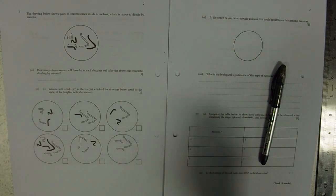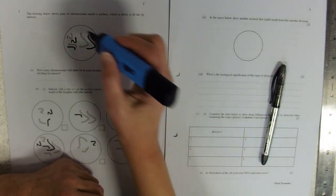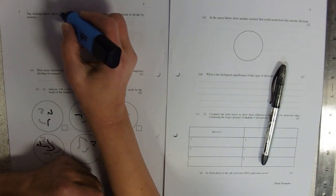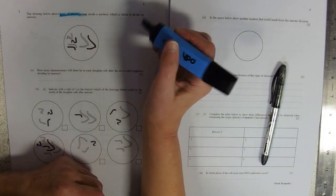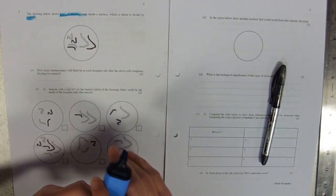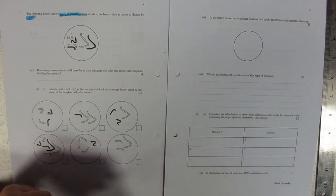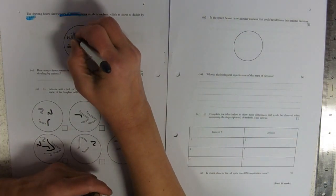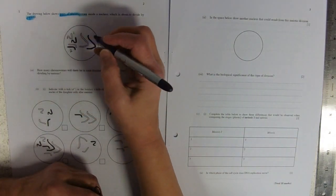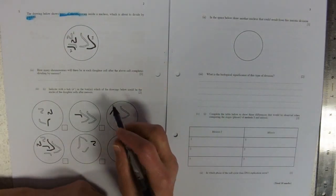This is clearly going to be about cell division. I've got lots of chromosomes I can see. So the drawing below shows pairs of chromosomes inside a nucleus which is about to divide by meiosis. It's a really rubbish highlighter. Never mind. So we've got pair one zigzag shape, pair two walking stick shape, pair three V-shaped.